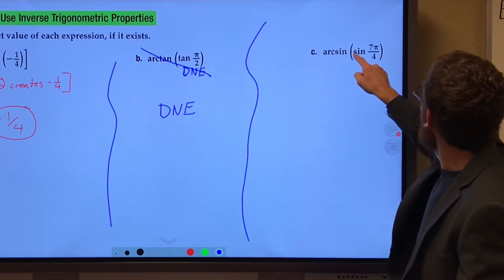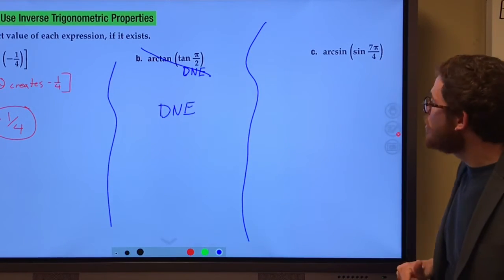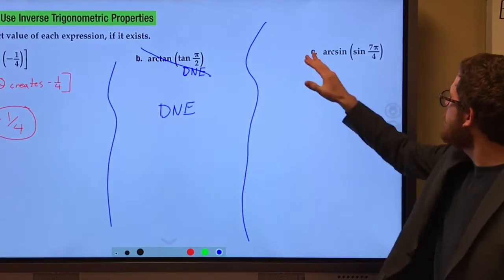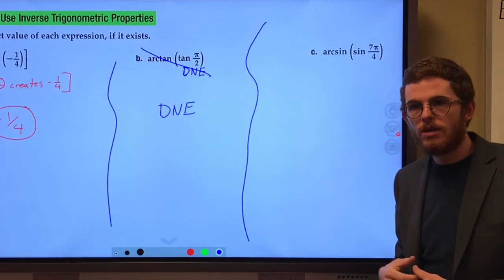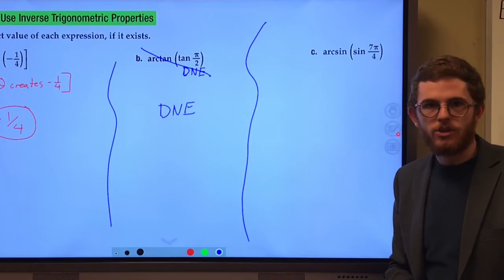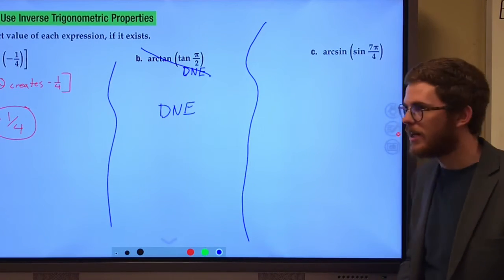Finally, arc sine of sine of seven pi over four. Yes, you know what you're thinking, arc sine and sine, they do undo each other, and it is pretty much as simple as that.